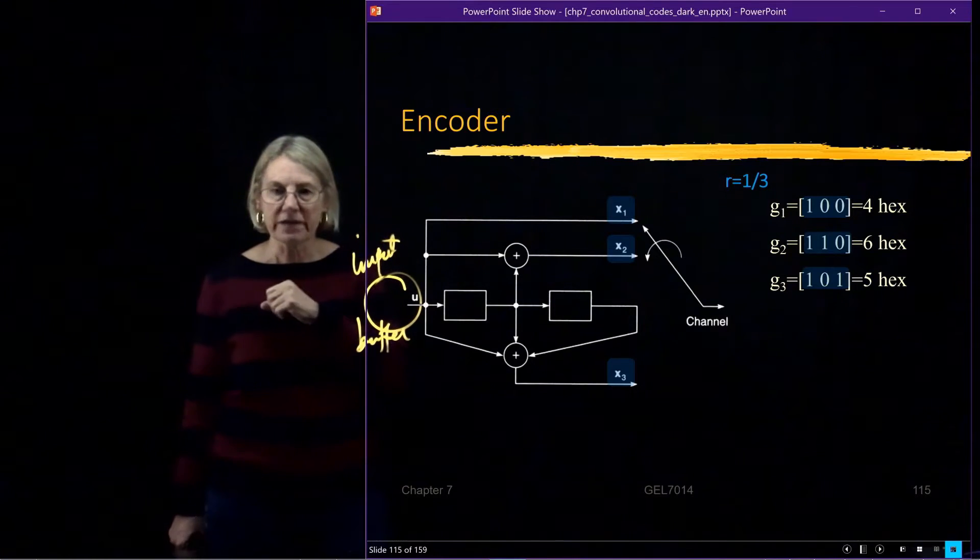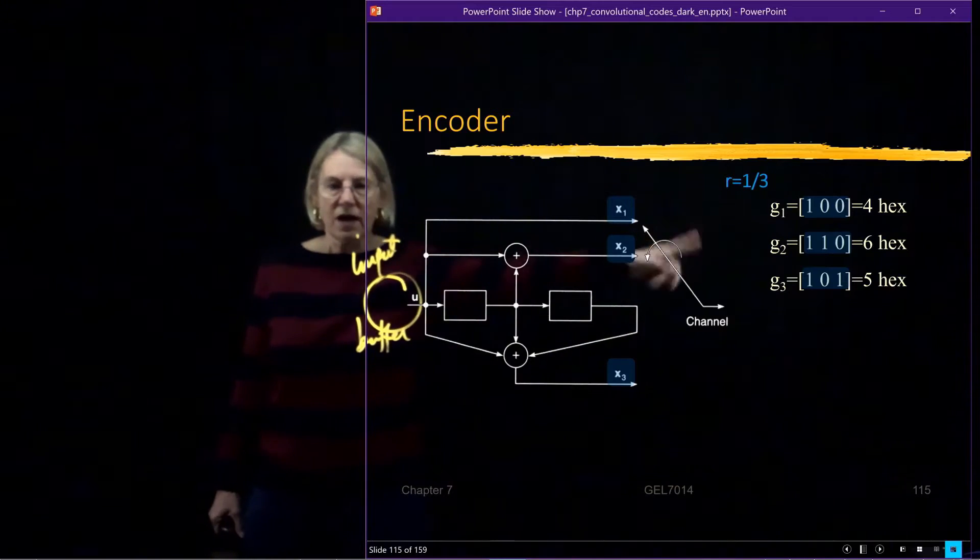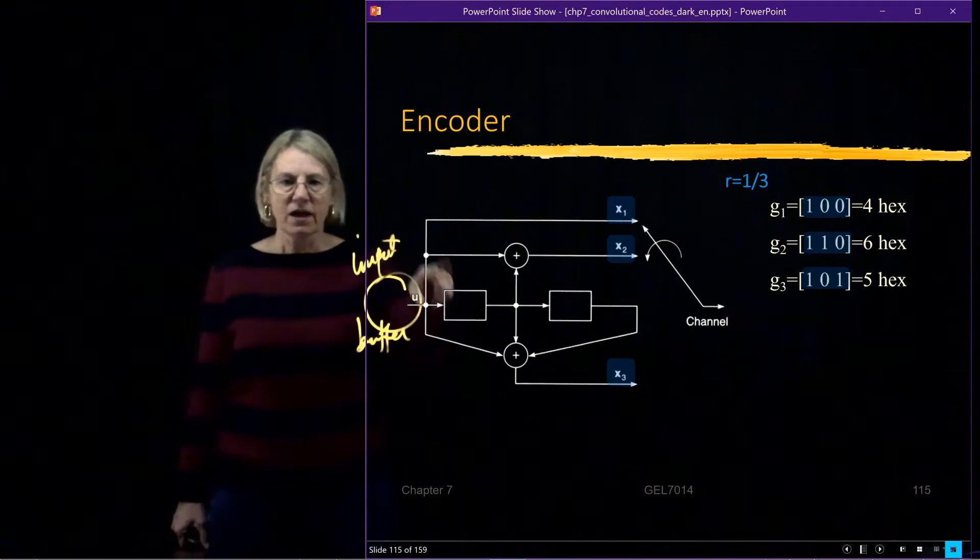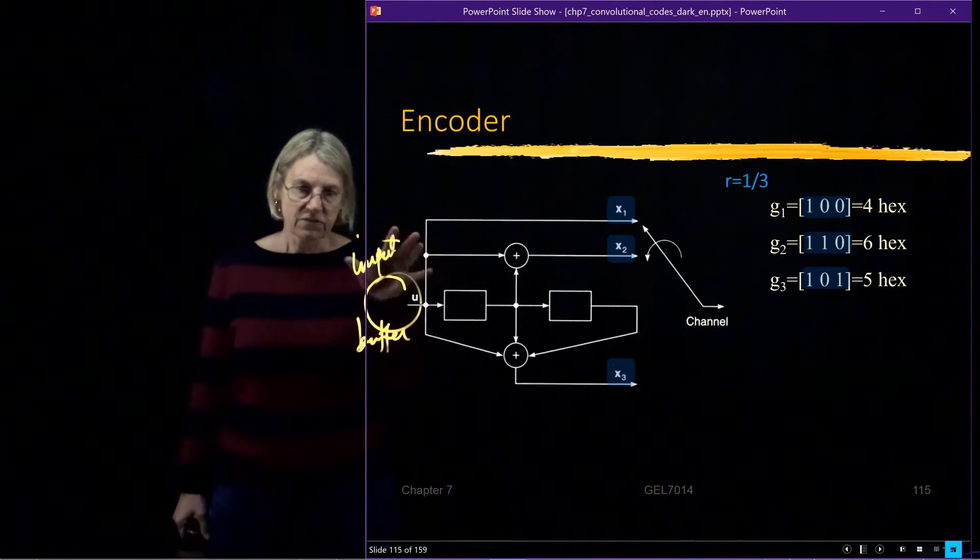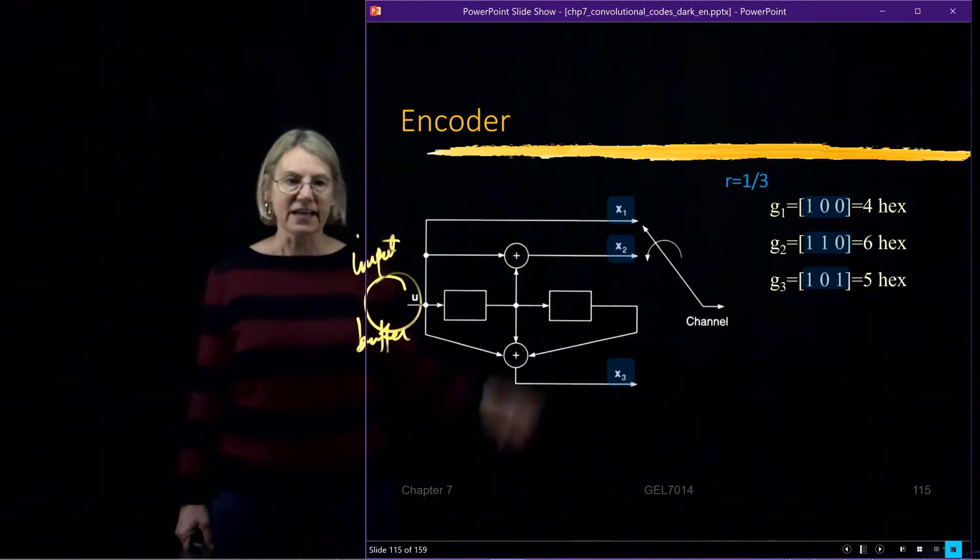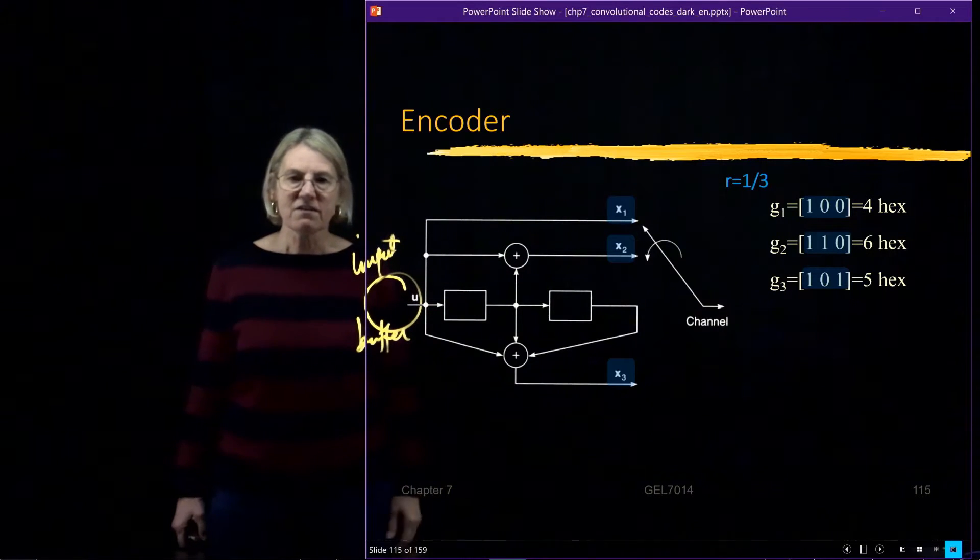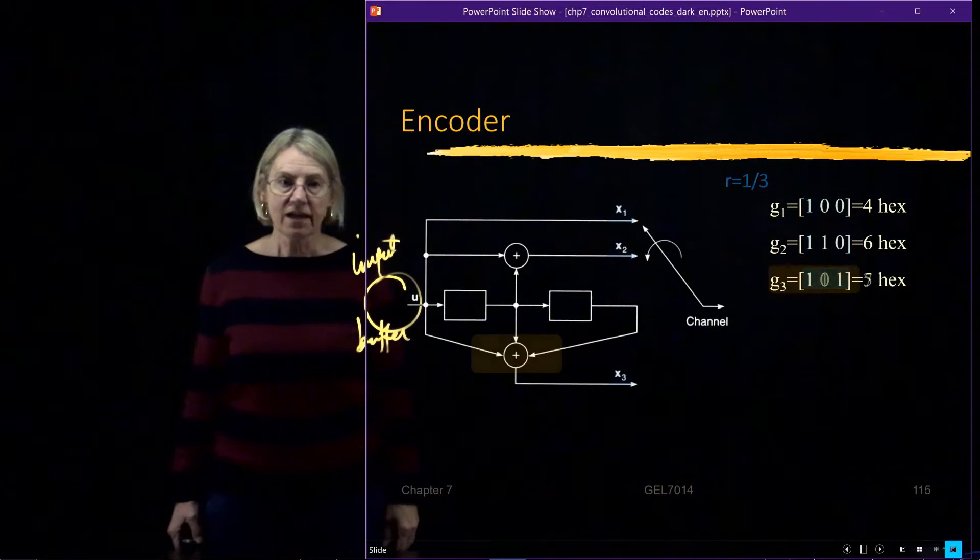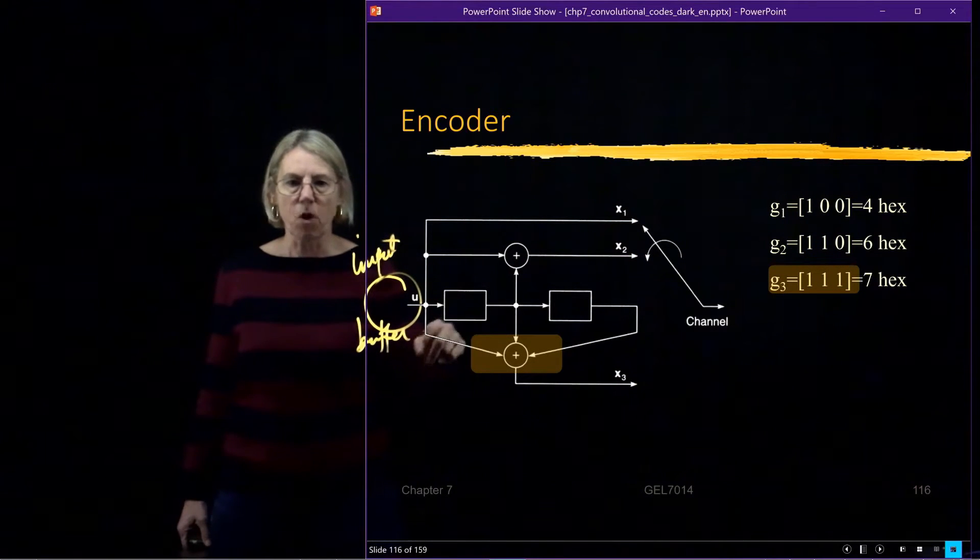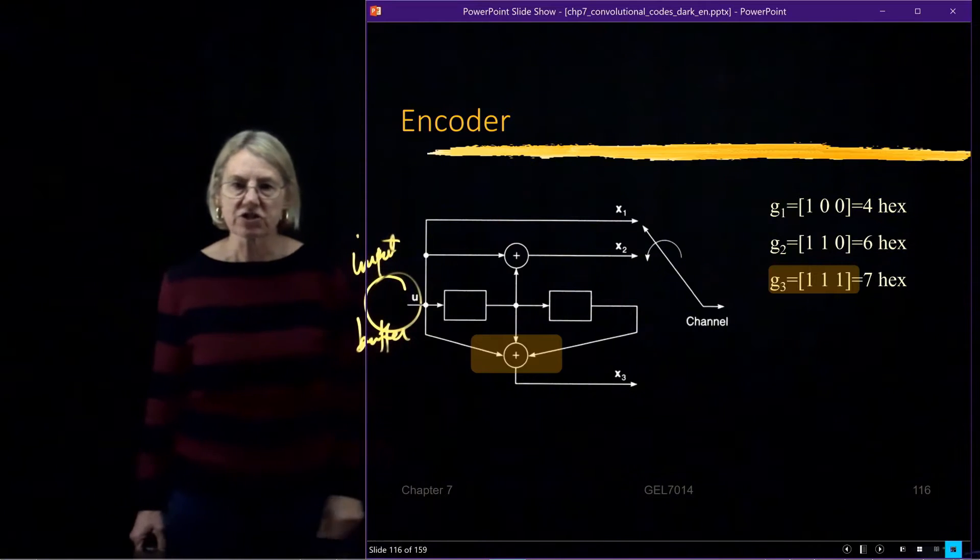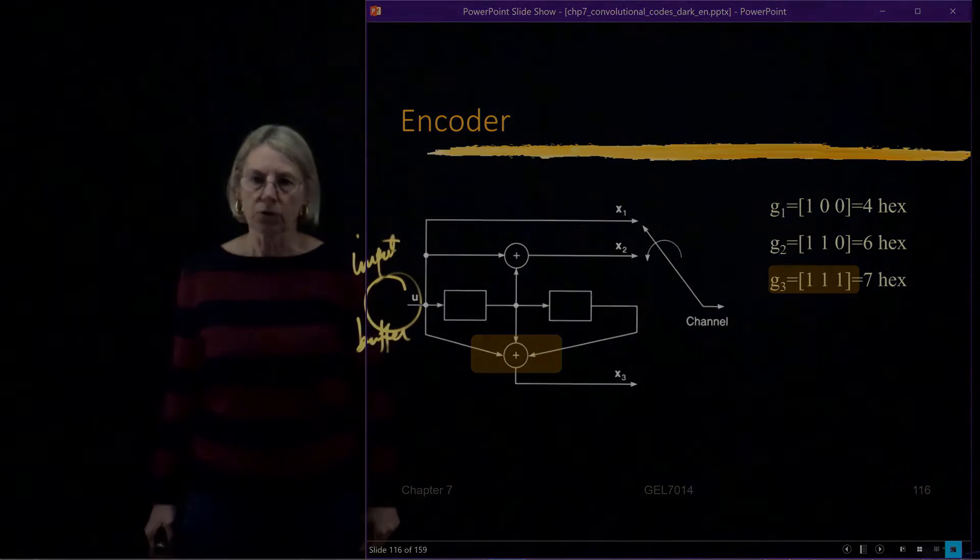Now the other two data bits are derived from these three registers. And in case of the second bit, you're adding the input buffer with the first register from the state. And in the third one, here we see the summation from all three. So all three of the registers are going to be added to generate the third bit of the code word.